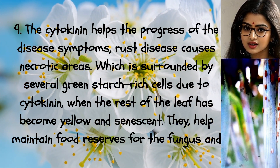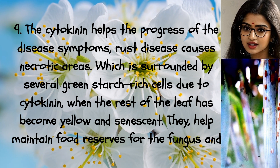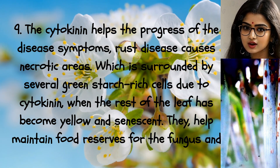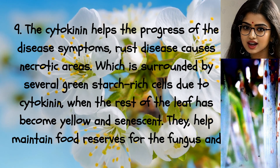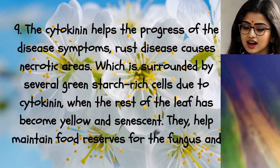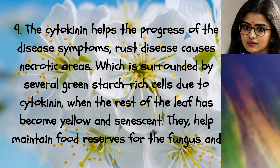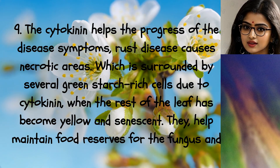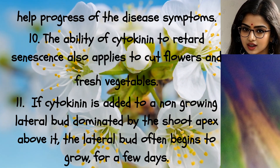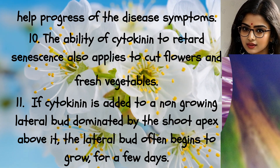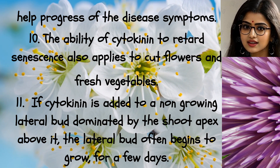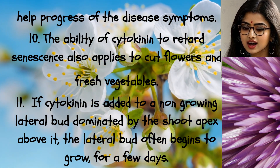Nine: cytokinin helps the progress of disease symptoms. Rust disease causes necrotic areas surrounded by green, starch-rich cells due to cytokinin, even when the rest of the leaf has become yellow and senescent. These cells help maintain food reserves for the fungus and help the progress of the disease symptoms.